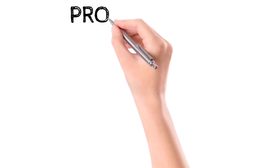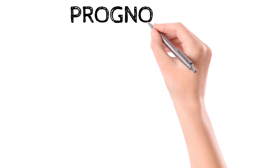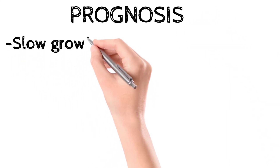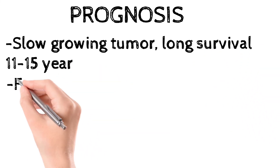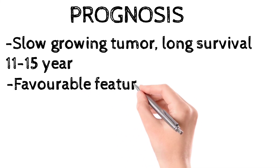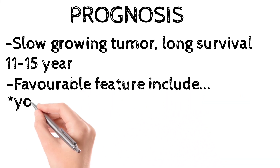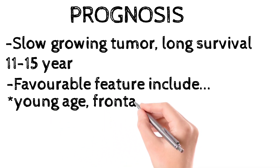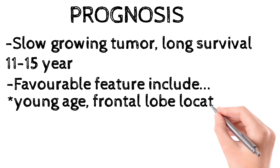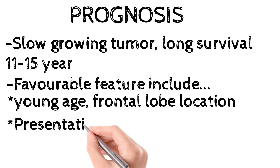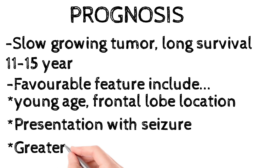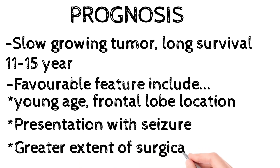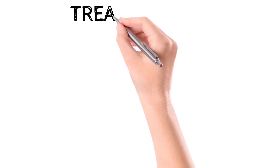Regarding prognosis, oligodendroglioma is a very slow-growing tumor and patients usually have long survival — typically 11 to 15 years. Favorable prognostic features include: young age, tumor in the frontal lobe, presentation mainly with seizures, and greater extent of surgical resection.